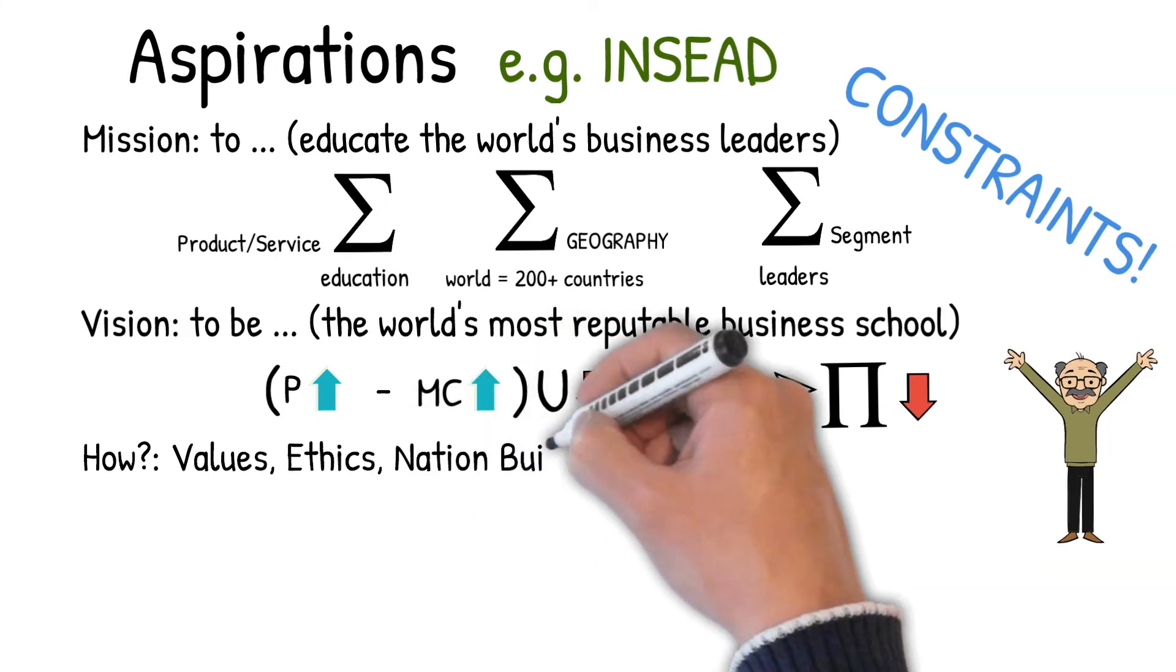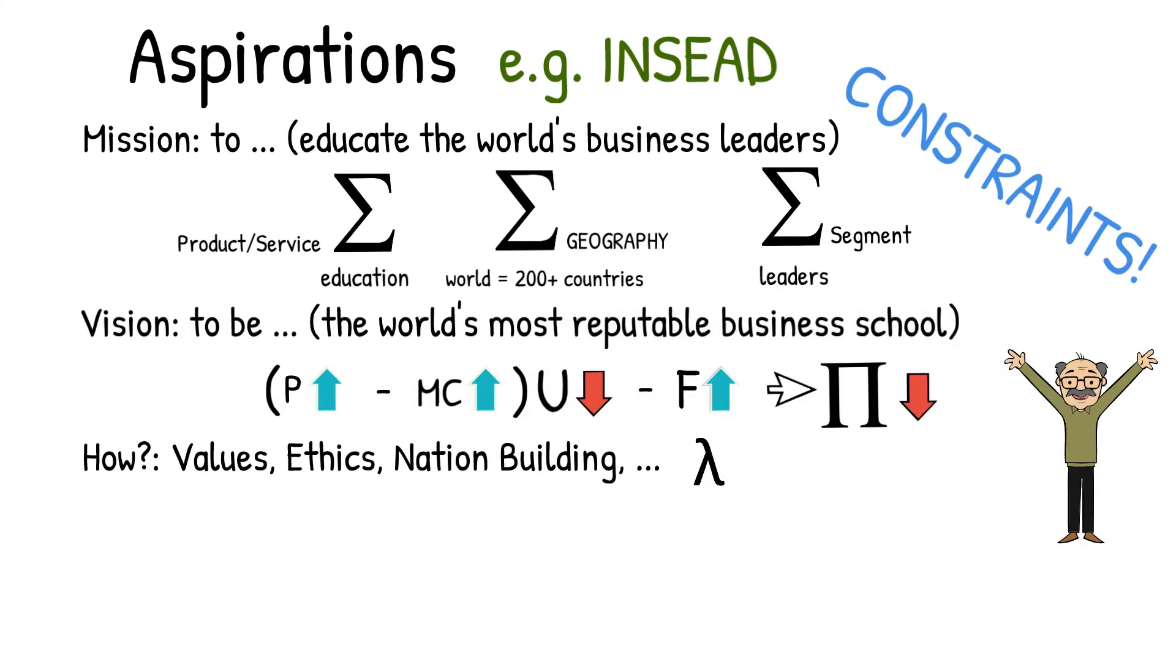The third component is often called values, or how do you hope to meet your mission or vision? And that involves ethics, values. It may be something broader, like we want to build a nation. This is called the lambda factor.